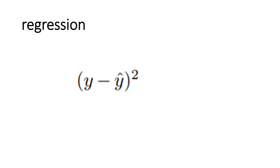Let's consider the case of regression. You have (y minus y-hat) squared, which tells you the difference between the actual value and the predicted value. This error tells you how close your model is to reality. When the value is very high, your model is not very close to reality; when it is very minimal, your model is close to reality. This squared loss tells you how good your regression model is and whether it generalizes well.